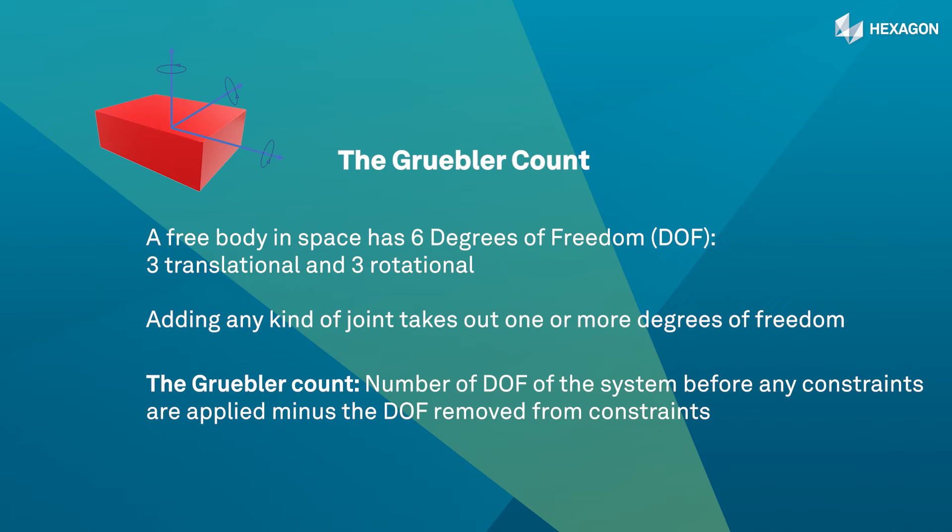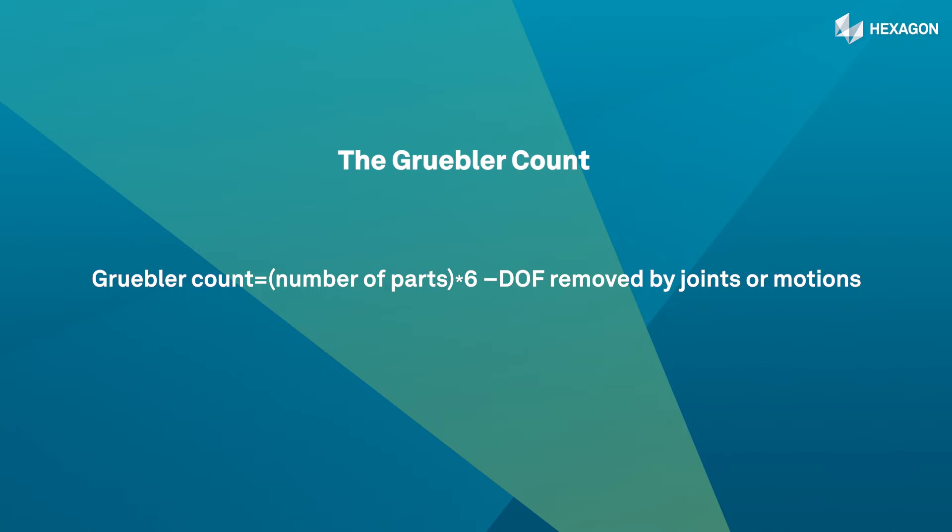The idea is that this should give us the number of degrees of freedom of the system. The Gruebler count is equal to the number of moving parts times six minus the degrees of freedom removed by joints or constraints.